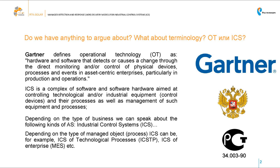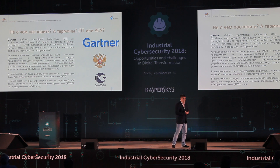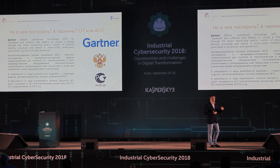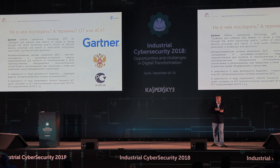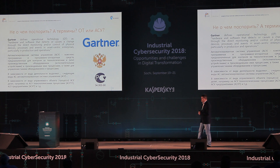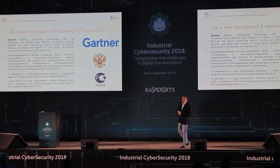We also have another definition of automated systems. Automated systems are usually the set of technical means and means of protecting information. Notably, both these definitions do not include a human — although very often we hear that the human factor is something which can create vulnerabilities for the system. That's just some food for thought.